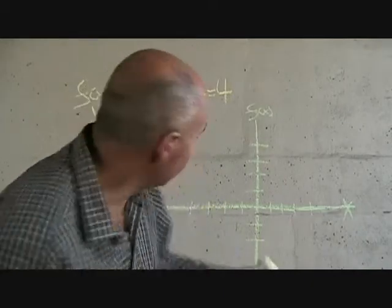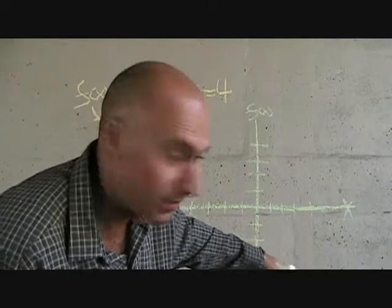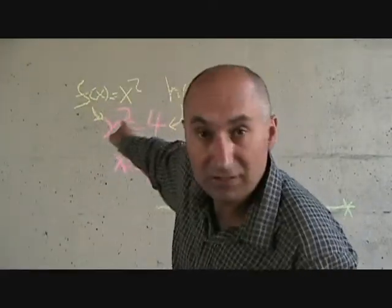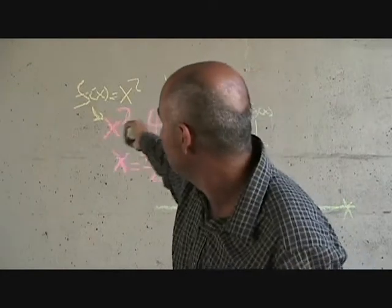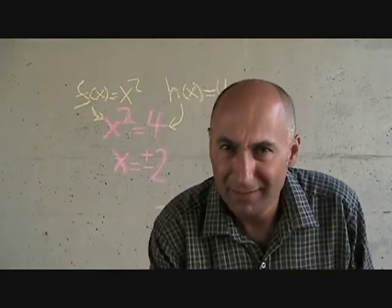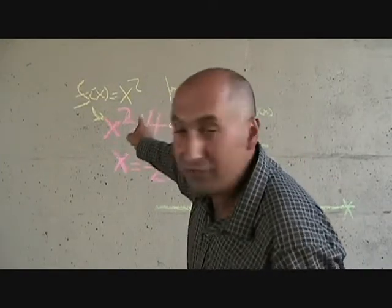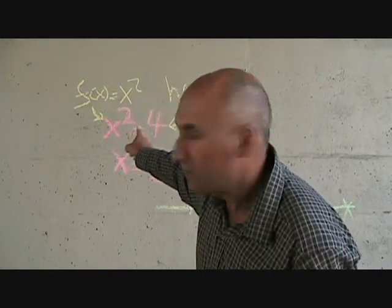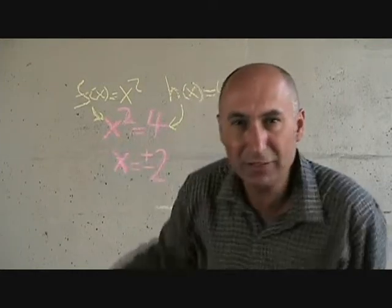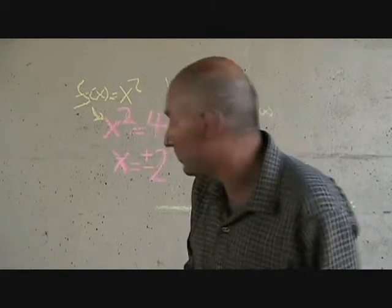So what we have here is just the x-y coordinate system — the Cartesian coordinate system. What we're going to do is graph f of x is equal to x squared. We haven't gone into graphing quadratic equations yet, but one way you could do it is a table of values where you plug in values for x and figure out what f of x is. Initially when they start teaching about functions, that's what you end up doing.